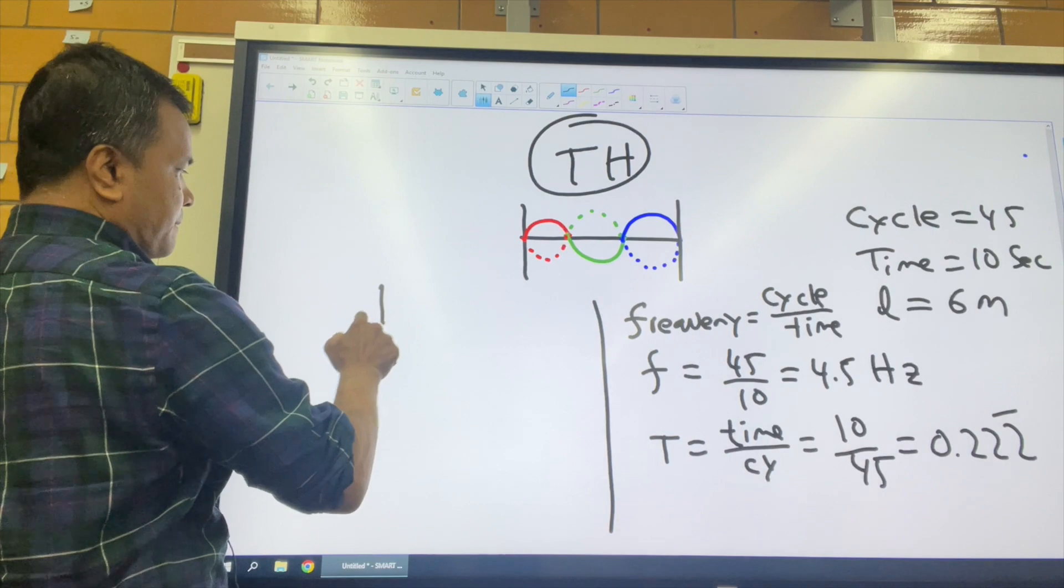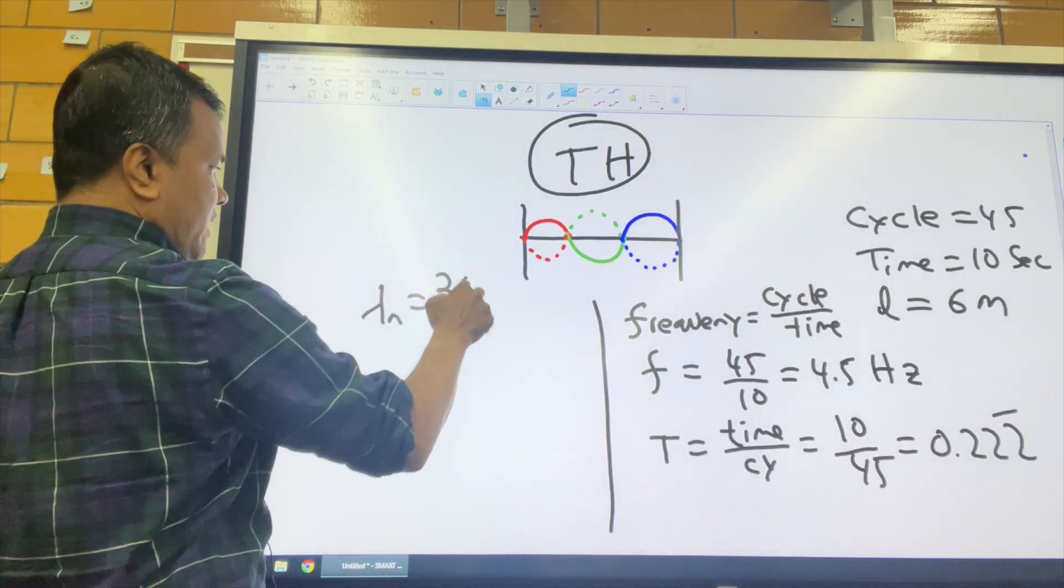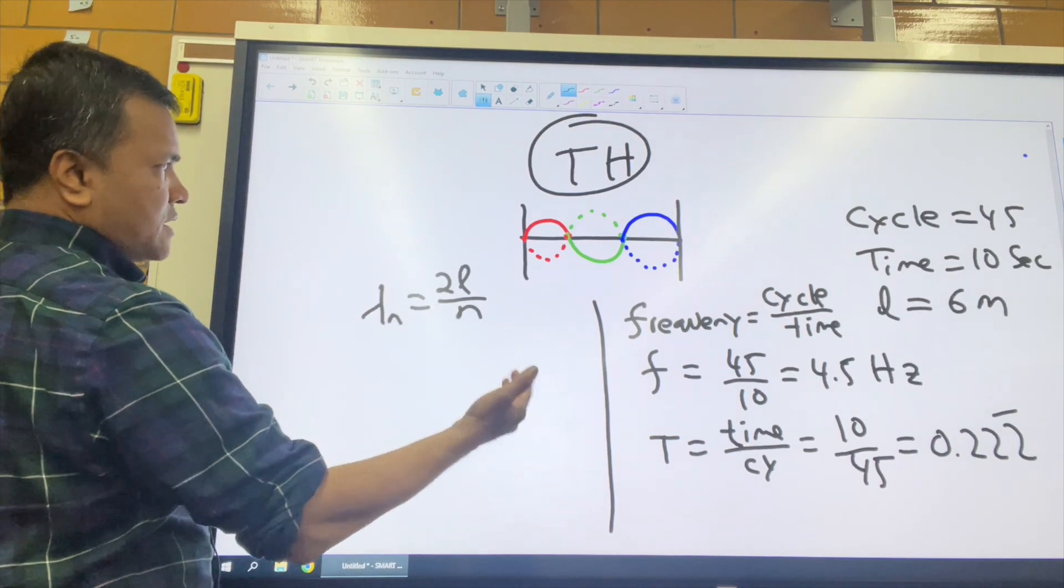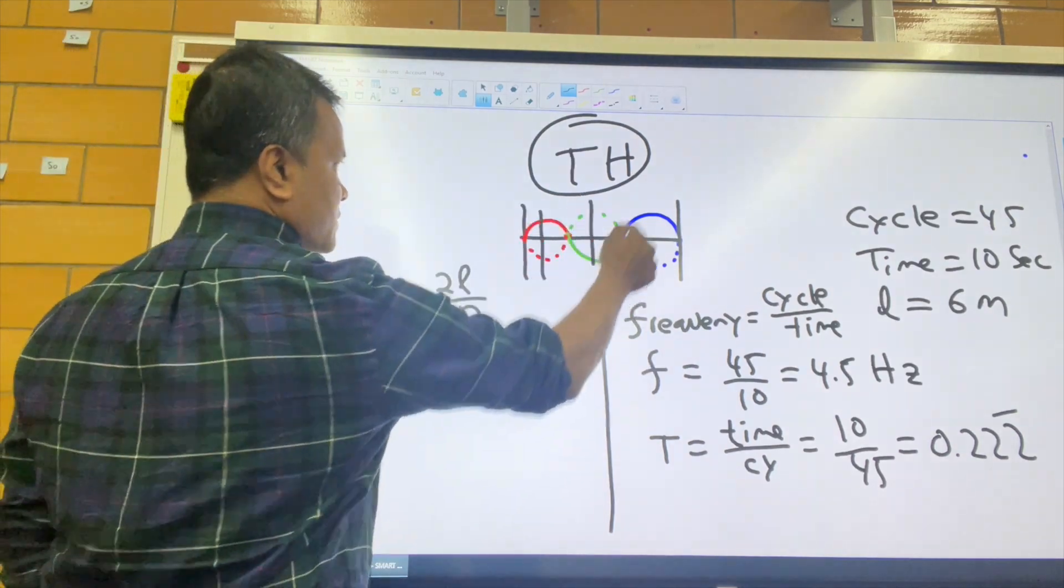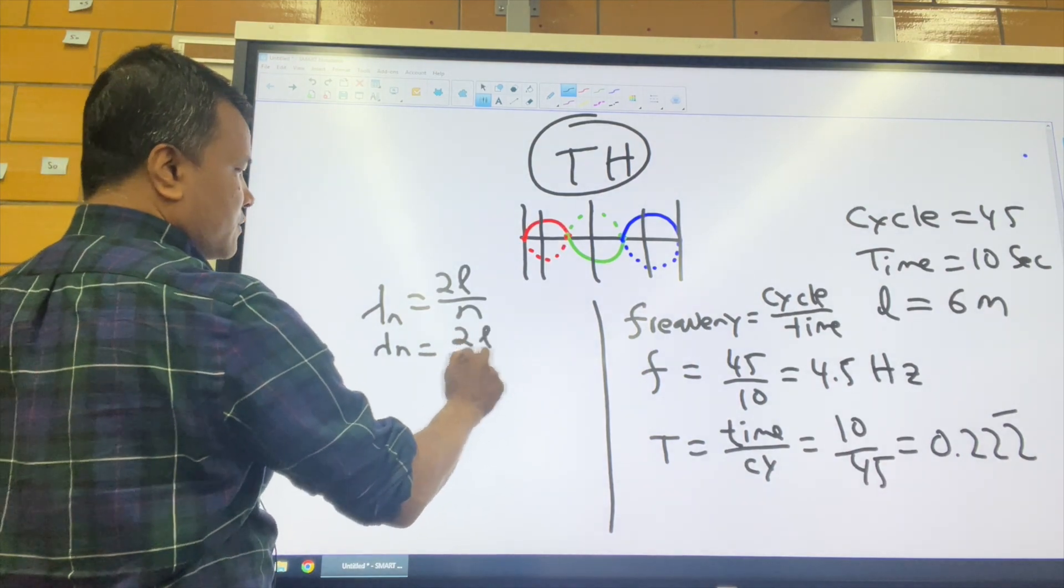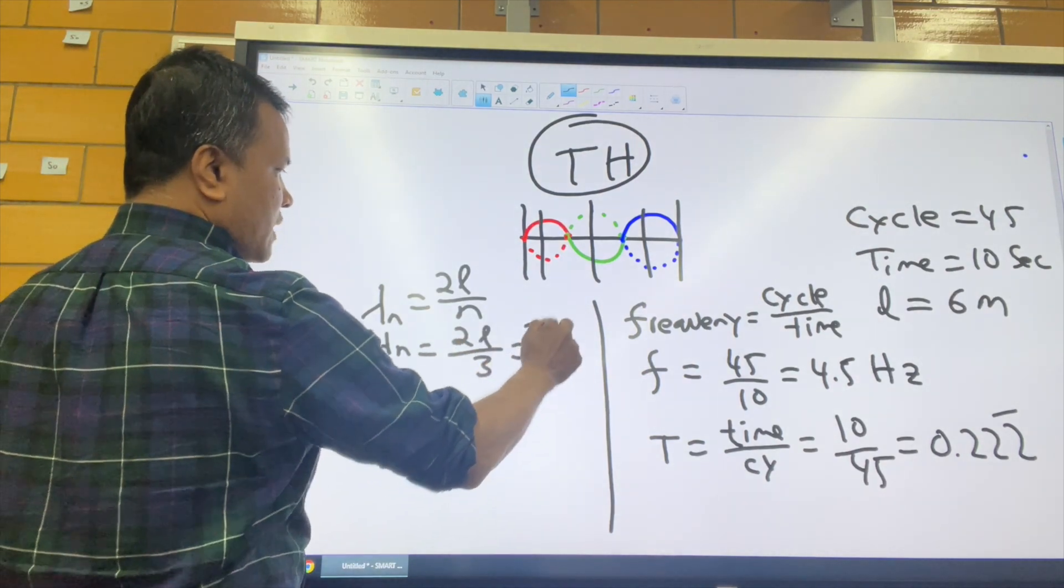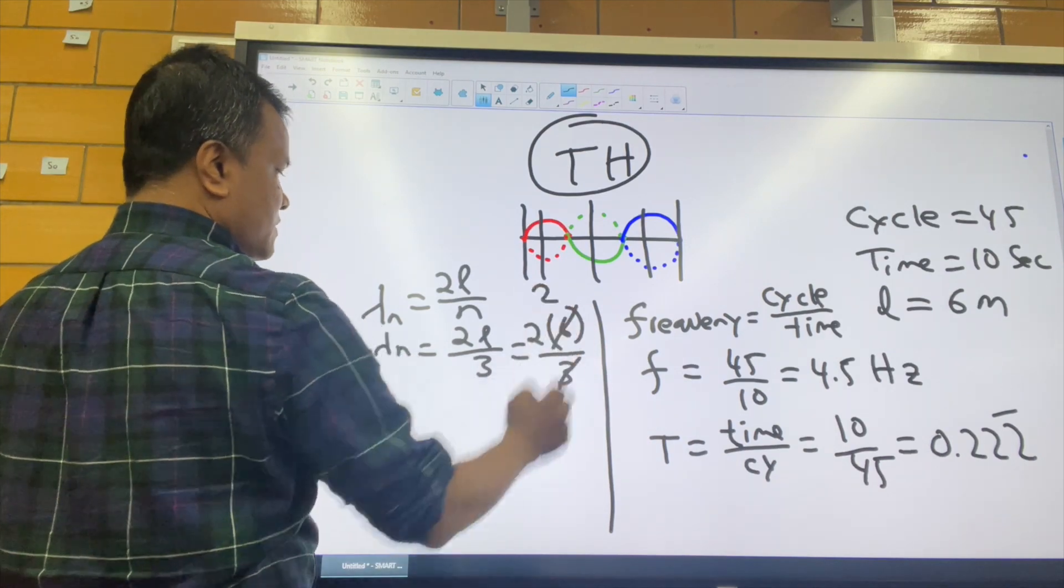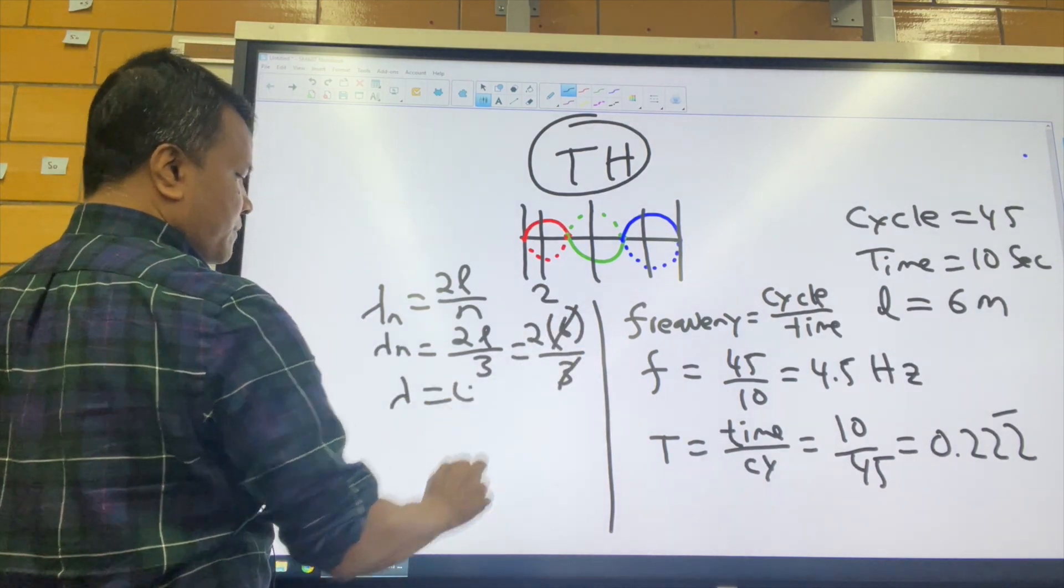Now find the lambda. Lambda is 2L over n. N is the anti-node: one, two, three. So lambda is 2L over 3. 2L is 6, so 3 goes into 6 twice. Lambda is 2 meters.